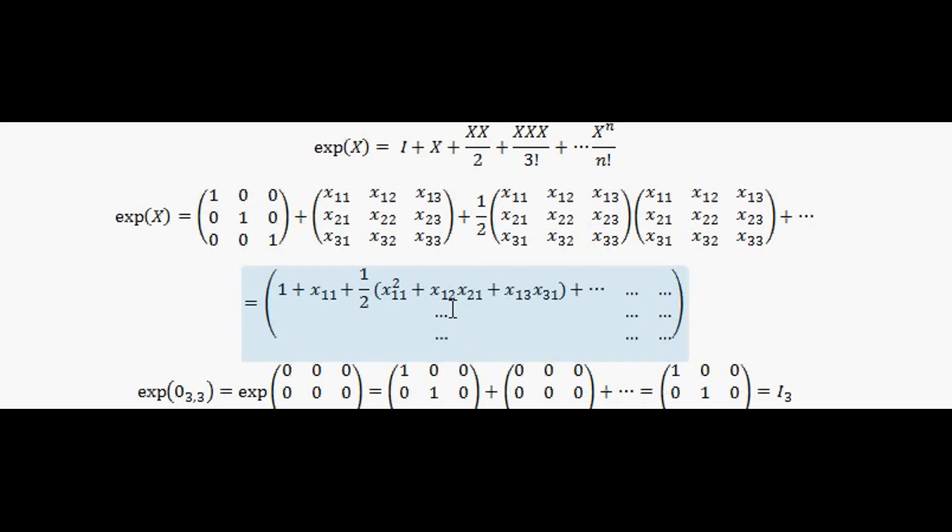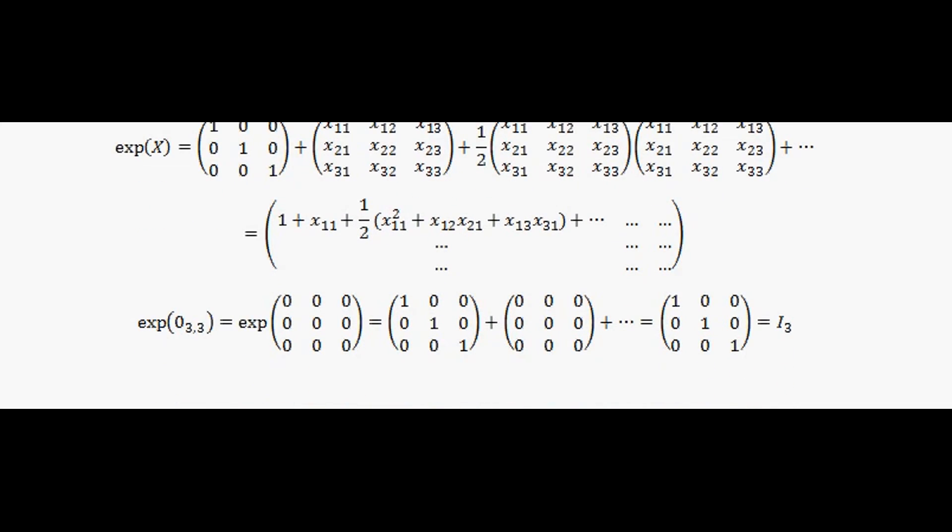So the first one is to take the exponential of a zero matrix, which is fairly straightforward. So this is a zero three-by-three matrix, so I'm going to take the exponential of it using the same definition, this one here.